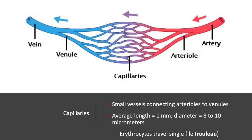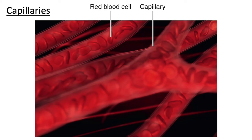The capillaries are the smallest blood vessels within the human body, connecting the arterioles — the smallest of the artery types — to the venules, the smallest of the veins. The average length is about one millimeter and they have a diameter about the width of a red blood cell or erythrocyte. Because they're so narrow, the red blood cells have to move in single file — a term we call rouleaux. There are about 10 billion capillaries on average within the body.